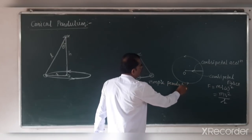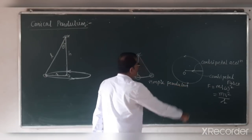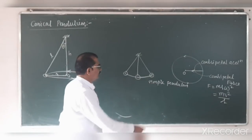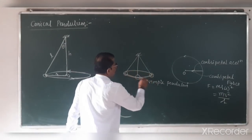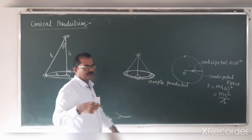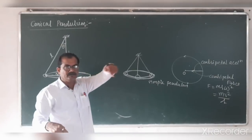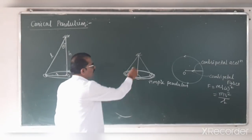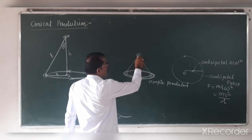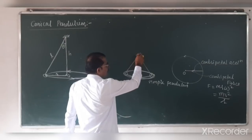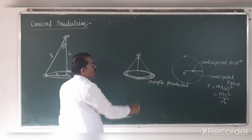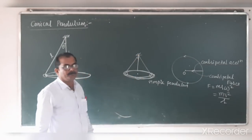But if the same bob or the same mass is revolved in a horizontal plane, forming a constant angle at the point of suspension, it is called a conical pendulum.